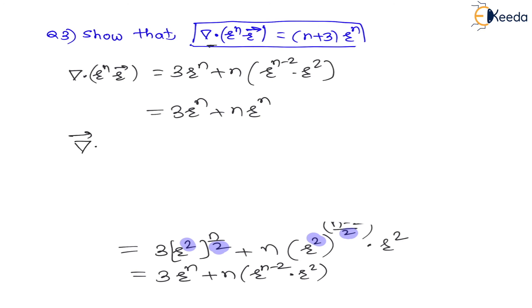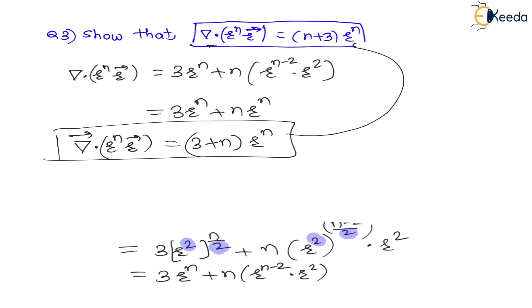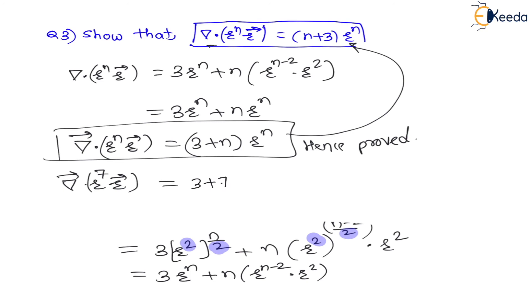Therefore divergence of r^n·r⃗ equals (n+3)·r^n — hence proved. Similarly, if they ask for divergence of r⁷·r⃗, replace n with 7: it becomes (3+7)·r⁷ = 10r⁷. Thank you dear students. In the next lecture we will see line integral.